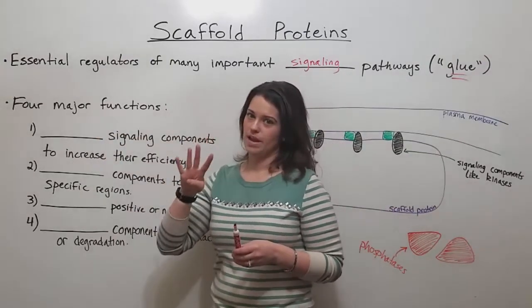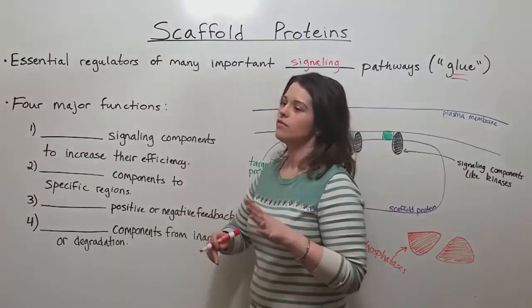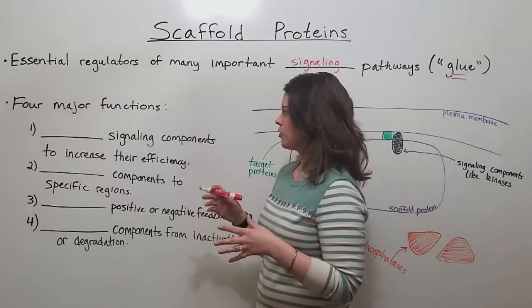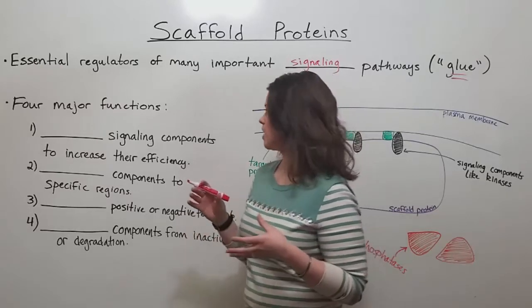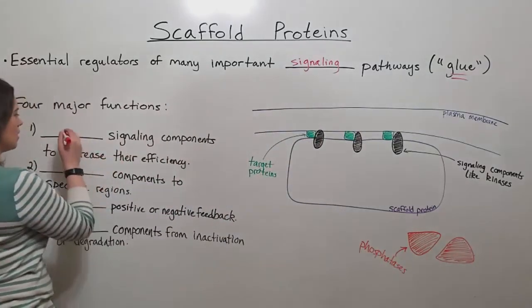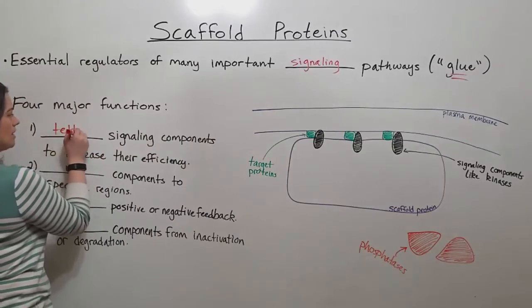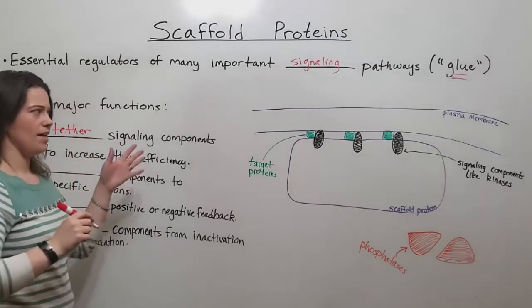Scaffold proteins work through four major functions. One of the things they do is tether signaling components together to increase their efficiency. What do we mean by tether?